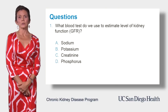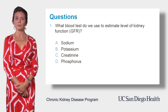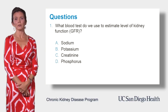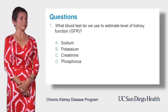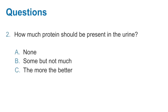Let's do two questions to test your understanding of this module. Question number one: what blood test do we use to estimate level of kidney function or GFR? Is it A) sodium, B) potassium, C) creatinine, or D) phosphorus? The correct answer is C — creatinine. Creatinine is used to calculate GFR.